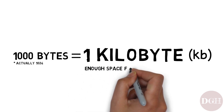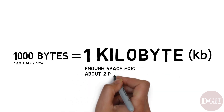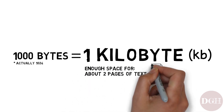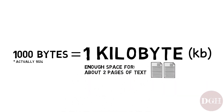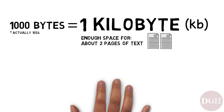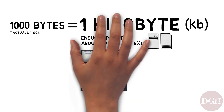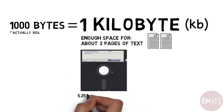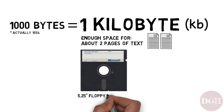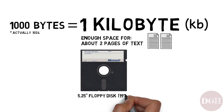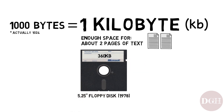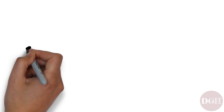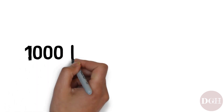One kilobyte is enough space to hold about two pages of text. Back in the late 1970s and early 1980s, the five-and-a-quarter inch floppy disk was a popular storage option. It could hold 360 kilobytes of information.